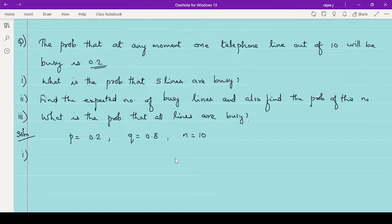So to get that probability, first of all we will write the distribution P of X equal to x is the distribution that is given by nCx P raised to x Q raised to n minus x